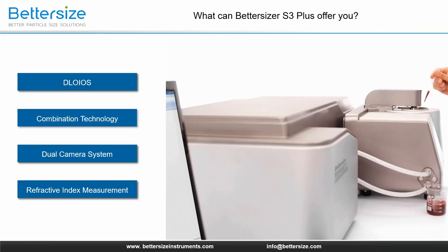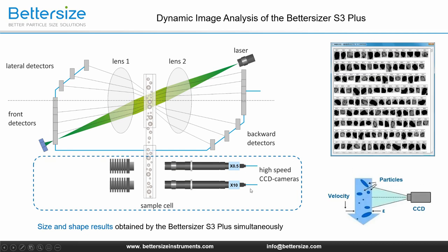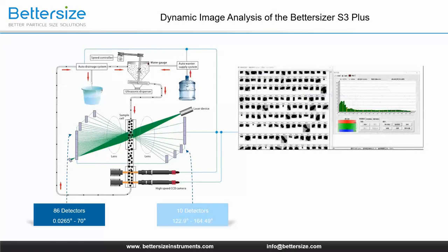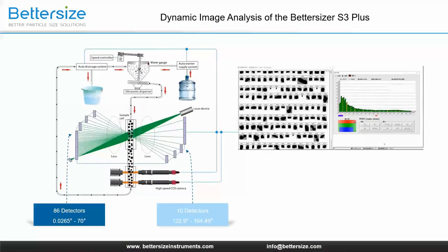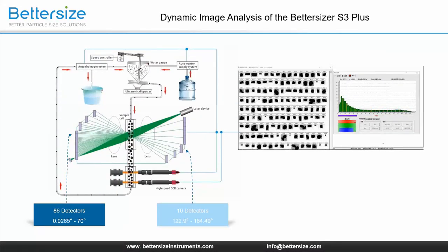Next, I am going to introduce the combination technology that the Betasizer S3 Plus is very proud of. Let's have a closer look at the optical bench structure. In addition to the classical components for performing the light scattering experiment — lasers, lenses, detectors — a camera system is implemented. These are two high-speed CCD cameras up to 70 frames per second, which enable sharp detection of moving particles at different magnifications, and therefore an additional evaluation with dynamic image analysis. The 0.5-fold and 10-fold cameras record images of coarse particles and statistically evaluate the results. This figure shows the measurement setup.